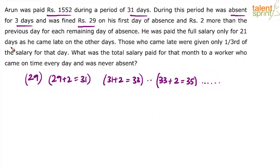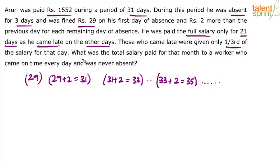He was paid the full salary only for 21 days. He was absent for 3 days, so remaining 28 days he was present. Out of those, he was on time for 21 days, so the remaining 7 days he was late. Those who came late were given only one third of the salary for that day. We need to find the ideal salary for that month when you are not late and not absent for any of the days.